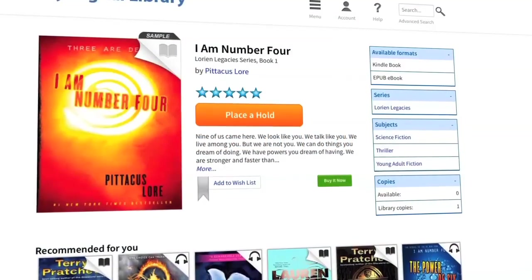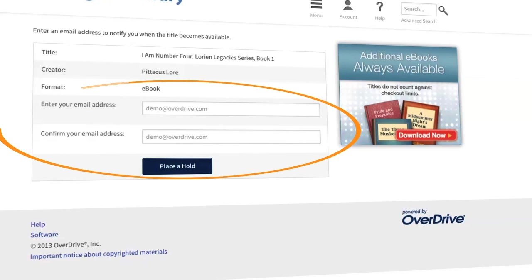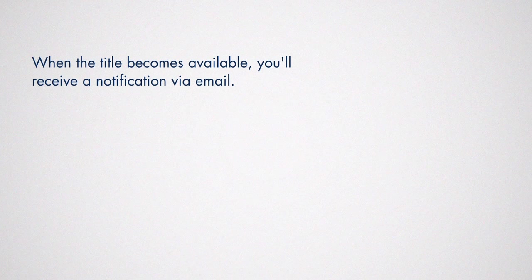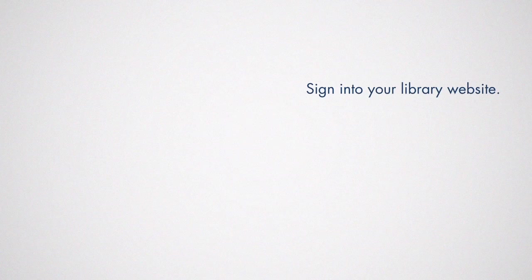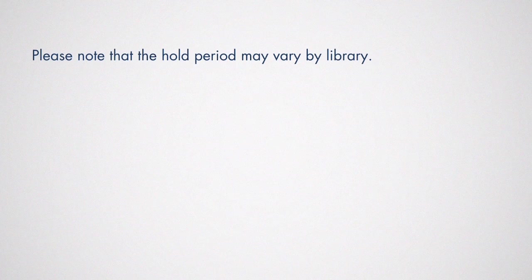If a title is not currently available, click Place a Hold and then enter your email address. When the title becomes available, you'll receive a notification via email. Simply sign into your library website, navigate to your account and then your holds, and click Borrow to check it out. Please note that the hold period may vary by library.